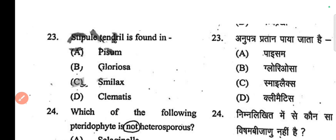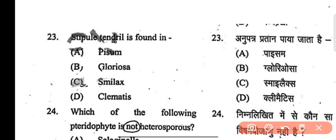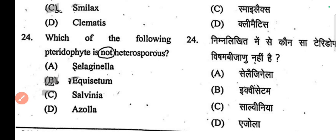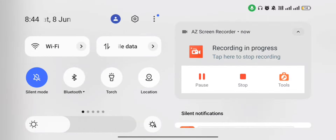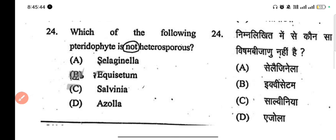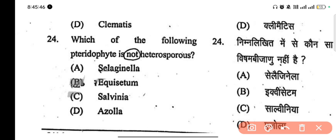Next question: stipulate tendril is found in Smilax. Next question: which of the following pteridophytes is not heterosporous? The correct answer is B.